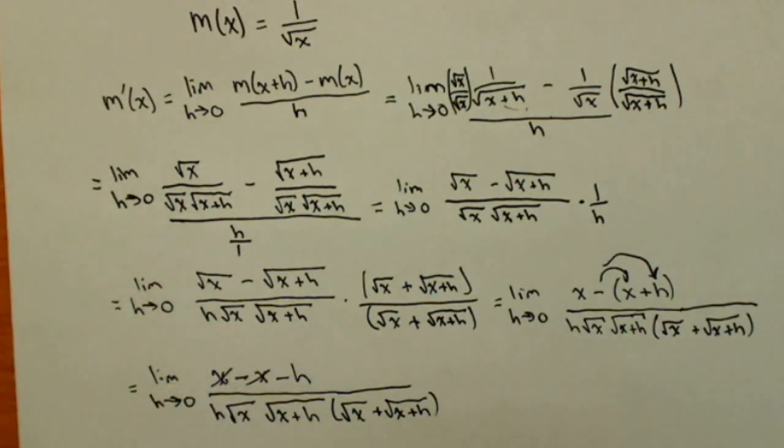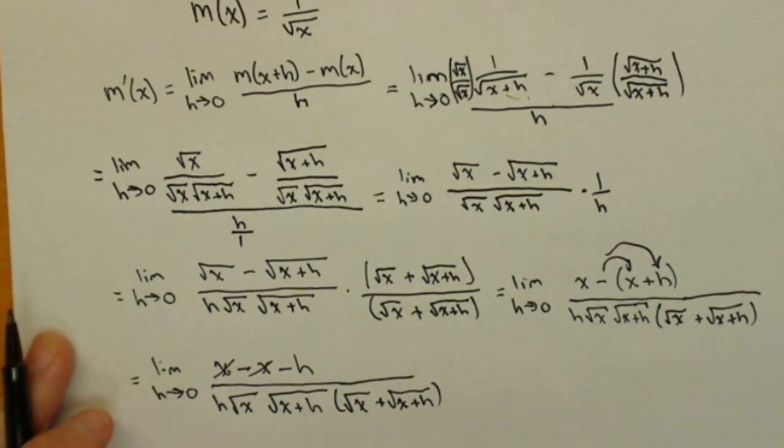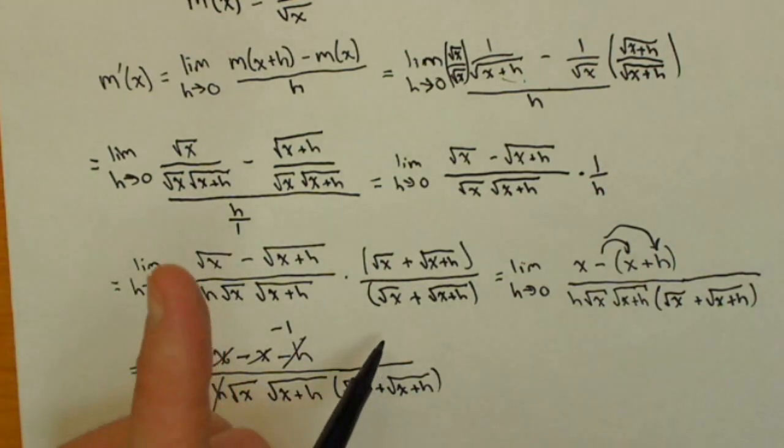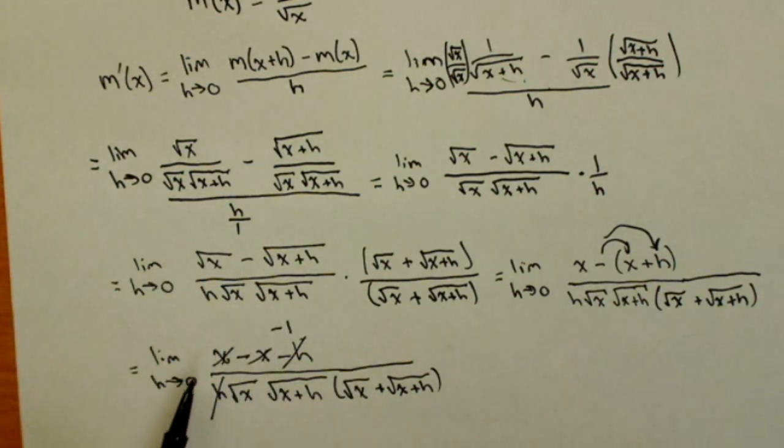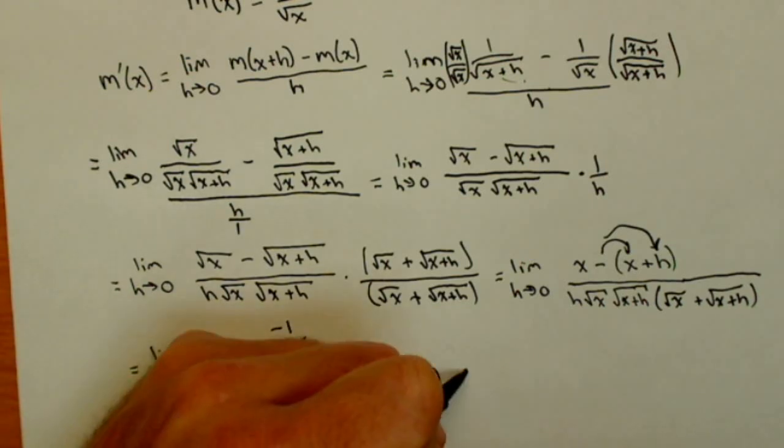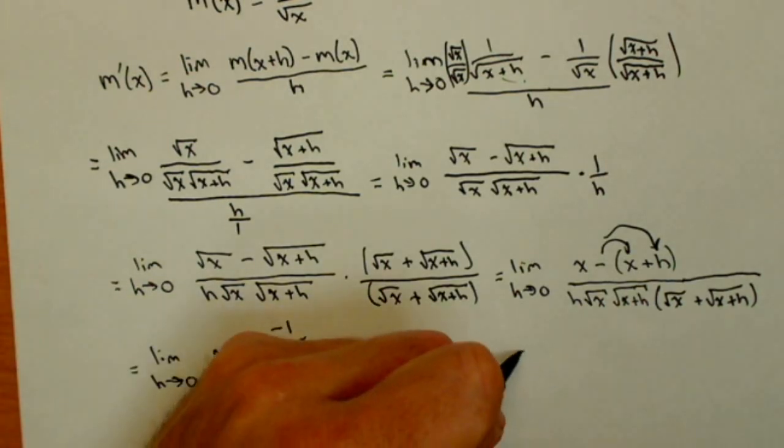Because these x's are going to cancel. Now, I can cancel out this h in the denominator with this h on top, and I just get left with negative 1. The beauty there is that now I can sub in my 0 for my h's. So that h is going to become 0, and so is that h.